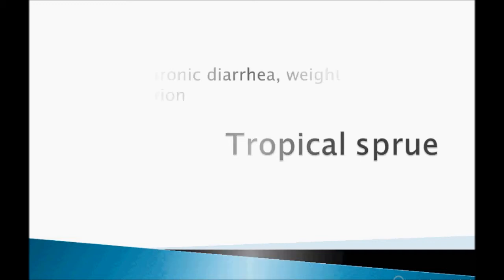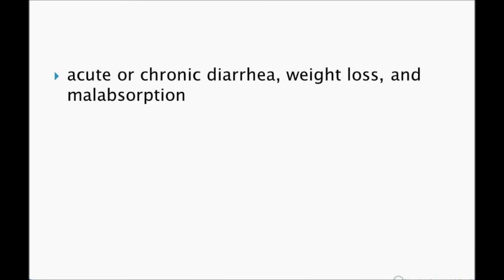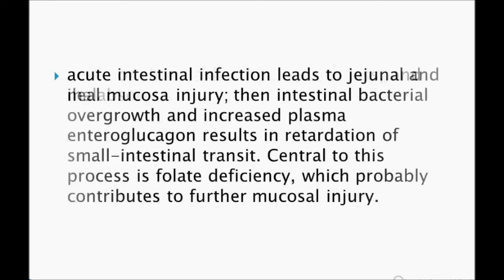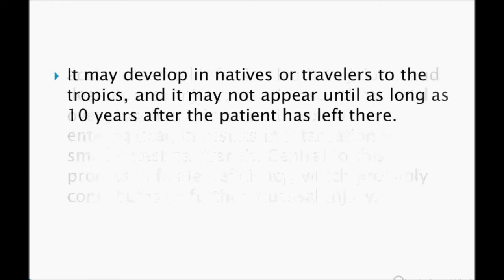Tropical sprue can present as acute or chronic diarrhea with weight loss and malabsorption — it is a malabsorption syndrome. An acute intestinal infection leads to jejunal involvement, involving bacterial overgrowth. Increased plasma enteroglucagon results in retardation of small intestinal transit. Central to this process is folate deficiency, which probably contributes to further mucosal injury.